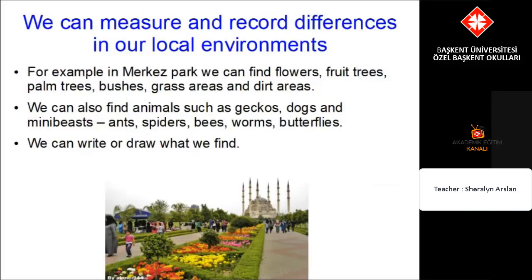We can measure and record differences in our local environments. For example, in Merkes Park we can find flowers, fruit trees, palm trees, bushes, grass areas and dirt areas. In these areas we can find animals such as geckos, dogs and mini beasts including ants, spiders, bees, worms and butterflies. We can record our differences by writing or drawing what we find.